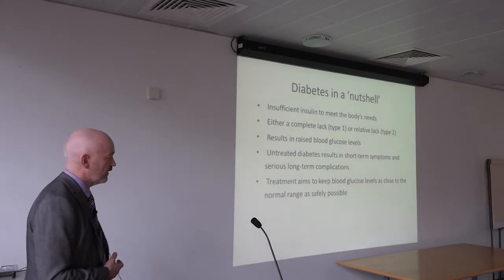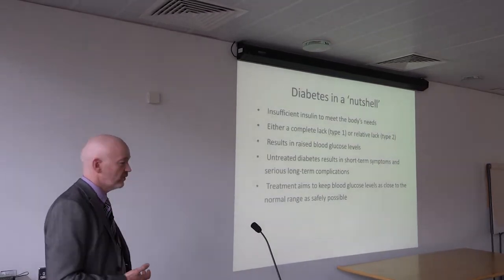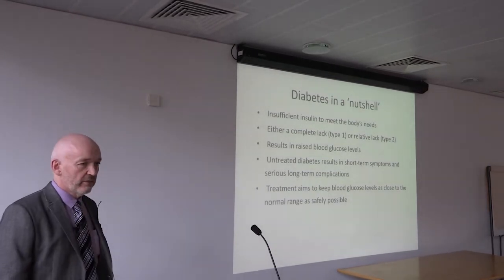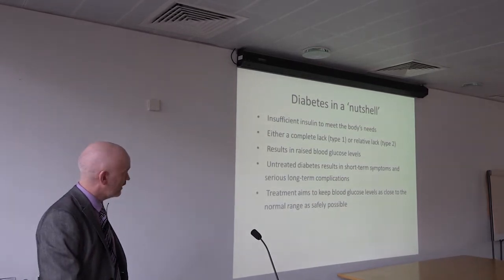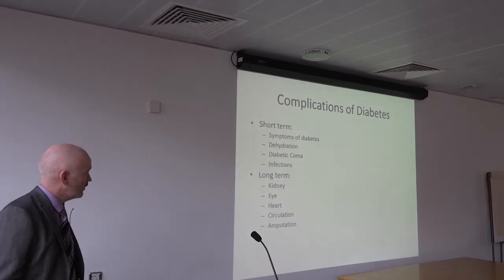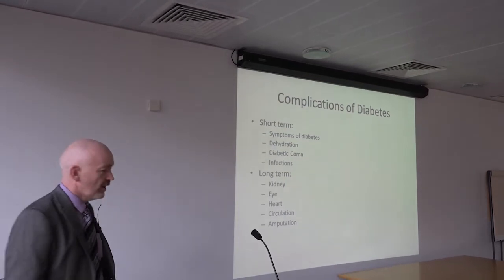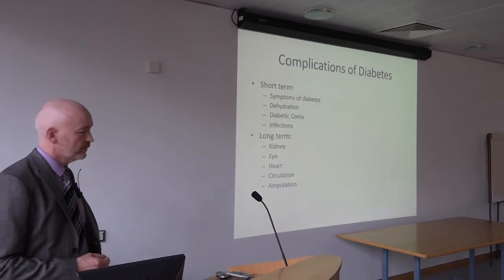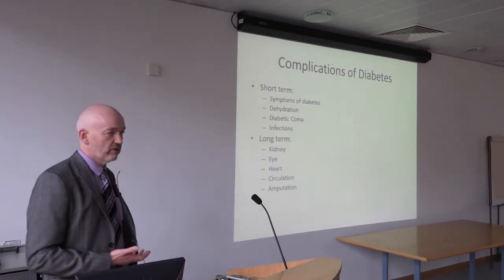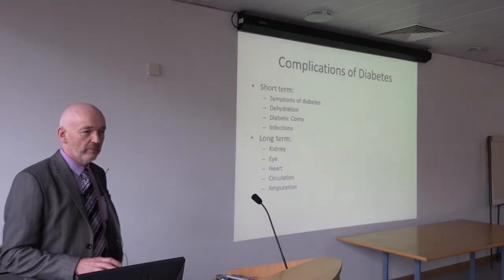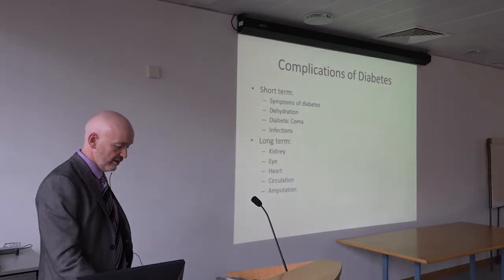People with diabetes can get symptoms regardless of the type — excessive thirst, excessive production of urine, weight loss, fatigue, and blurred vision are the common ones. In the long term, if blood sugar remains high, other tissues can be damaged. Short-term, the excess urine production can cause dehydration and, in type 1, eventually diabetic coma. High blood sugar also creates a good environment for infections. Long-term complications can damage the kidneys, eyes, heart, and circulation, and can result in amputations.